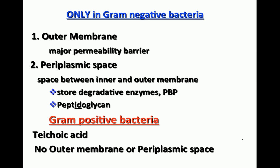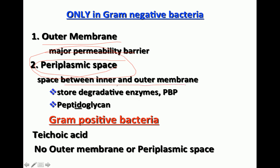In exams you may be asked for differences between gram-positive and gram-negative cell walls. The major difference is peptidoglycan layer thickness. Gram-negative bacteria have an outer membrane as the major permeability barrier, a periplasmic space storing enzymes like penicillin-binding proteins, and one or two layers of peptidoglycan. Gram-positive bacteria lack the outer membrane and periplasmic space, having instead teichoic acid.